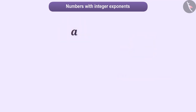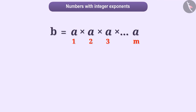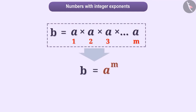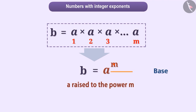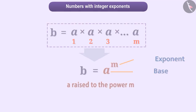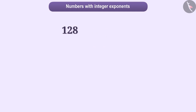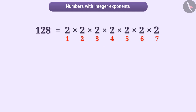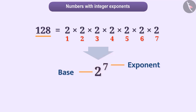If a number A is multiplied by M times itself, we get the number B. Then we express the number B in an exponential way and read it as A raised to the power M. We call the number A as the base and the number M is the exponent of the number A. Like, we have the number 128 when 2 is multiplied 7 times by itself. So, we express 128 as 2 to the power 7. It has 2 as base and 7 is an exponent.